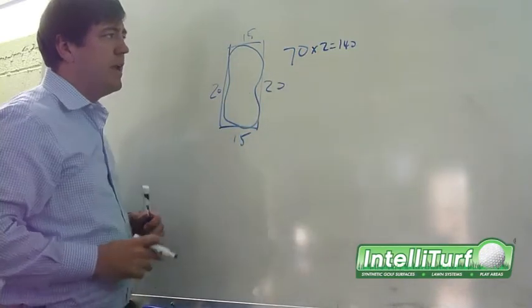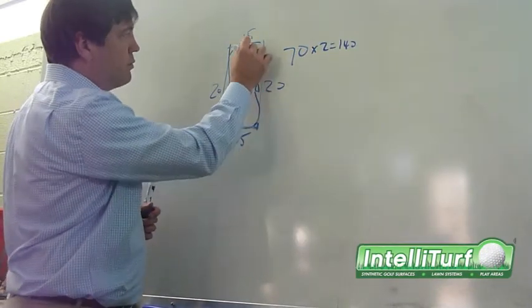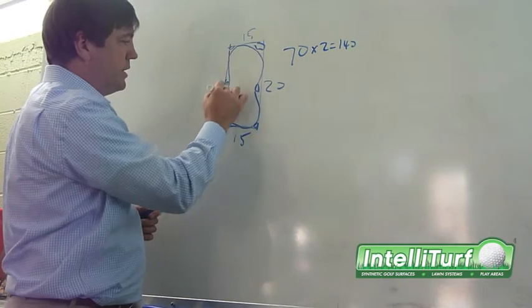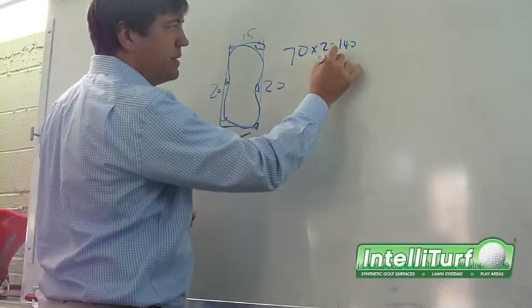It's 140 feet around. Now for the corners and the curves, what we do normally is we add 40 percent to this.